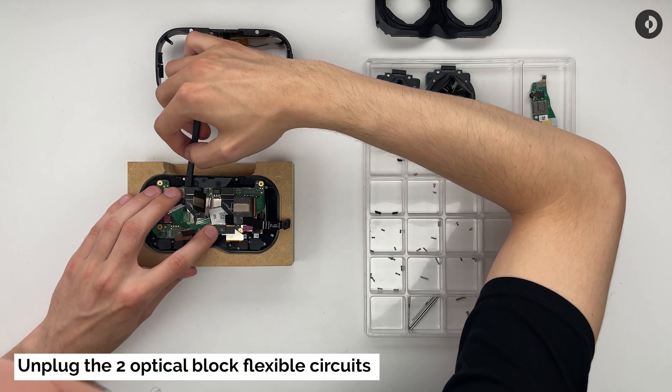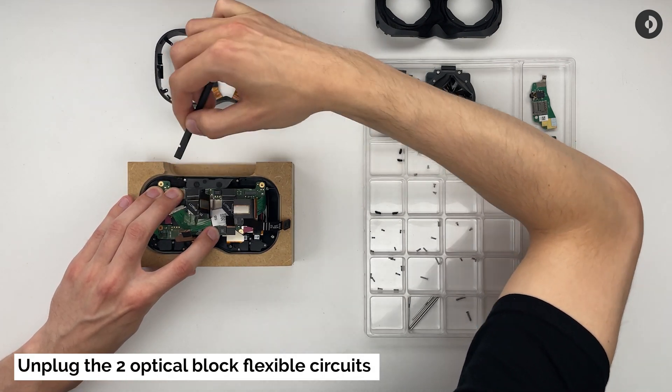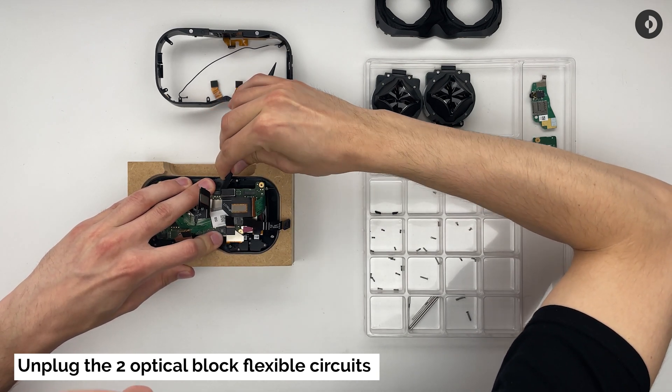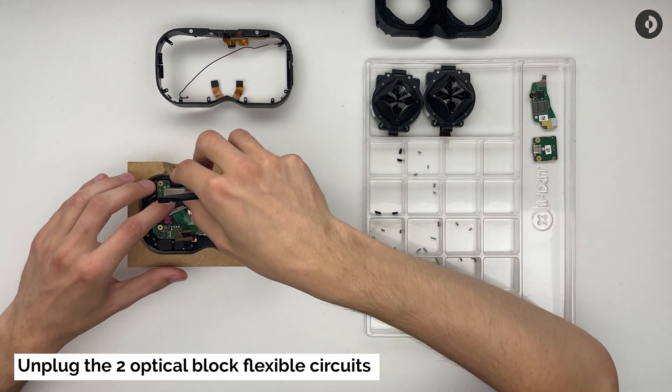With the spatula, you can now disconnect the FPCs that used to hold together the optical blocks and the mainboard. You will find both connectors at the top center of the mainboard.